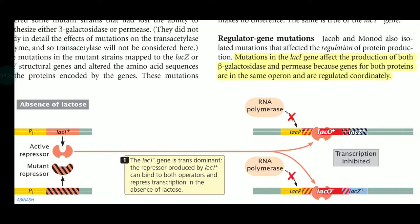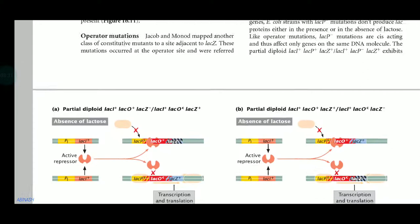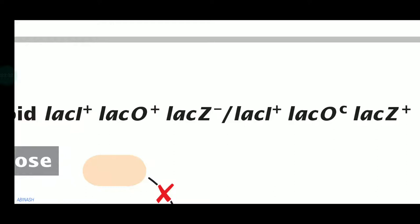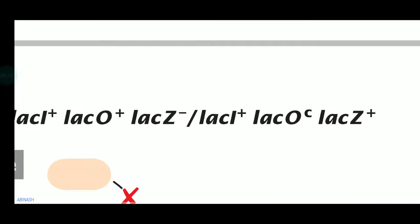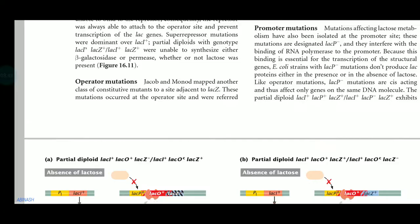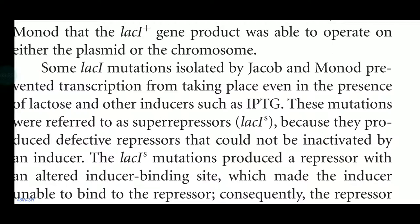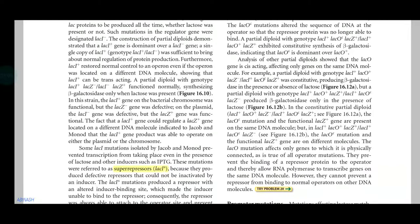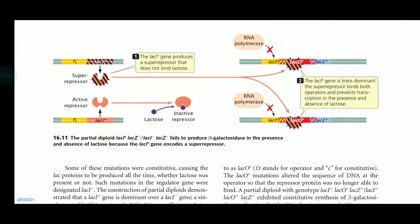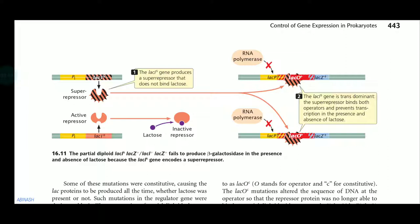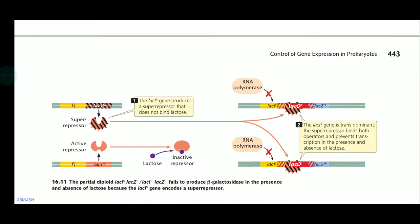You can see how it is written — lac I plus, lac O plus, lac Z minus, meaning it is a mutated one. There is also the super repressor and the lac Sc complementary notation. Lac Sc means complementary — it helps undergo transcription by preventing the blocking of RNA polymerase by the repressor. So we are going to discuss about this mutation of the lac operon.